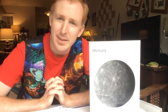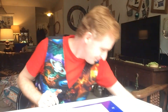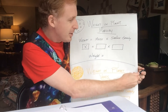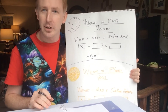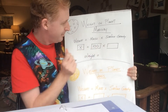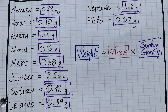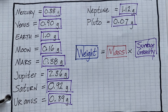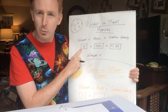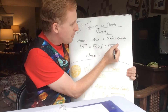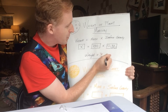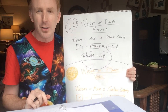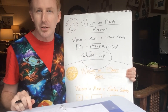Now let's calculate what your weight would be on Mercury. We fill in our mass — which we calculated earlier — as 100. The surface gravity for Mercury from our planet table is 0.38. Solving for weight x: 100 times 0.38 equals 38. So if your mass was 100 on Earth, you would weigh 38 — whether that's pounds or newtons — on the surface of Mercury.